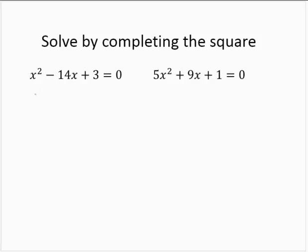So I'm going to subtract 3 from both sides. So then I would have x squared minus 14x is equal to negative 3.